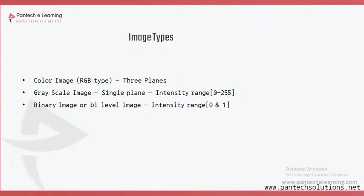Moving on to grayscale images: a grayscale image is a single-channel image in the format of 0 to 255, so storage is reduced. In image processing, there is a preprocessing block. In preprocessing, the first step is to convert the RGB image into grayscale. If we convert RGB to grayscale, we can do all operations on the image, and the storage is also reduced because RGB is three channels while grayscale is only one channel.